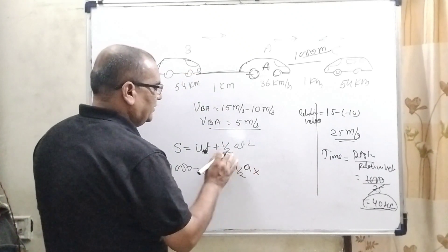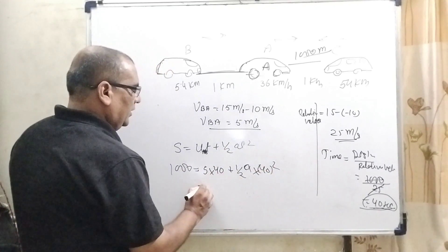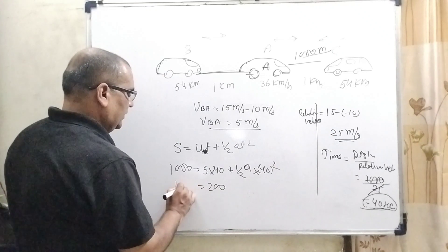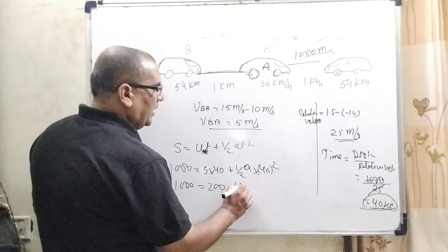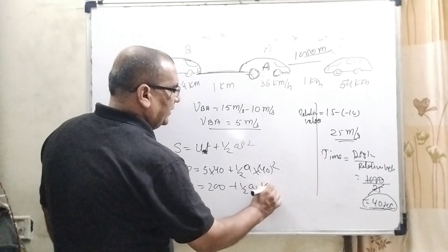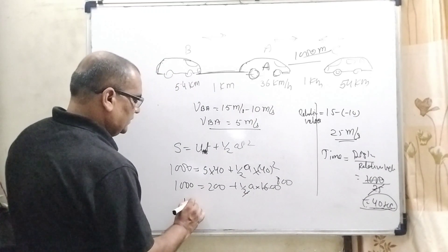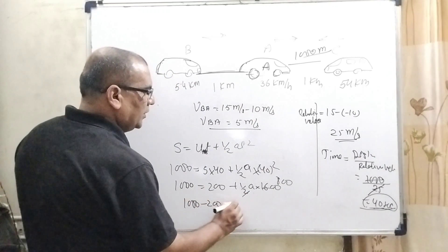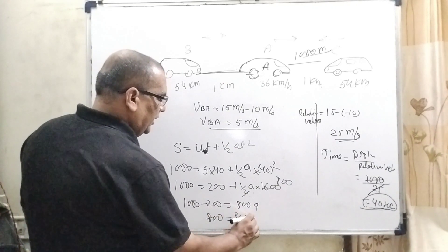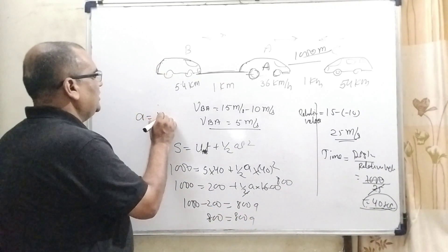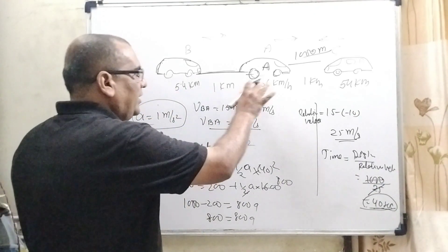One by two, here we have to find out acceleration. What is the acceleration? We get from this formula, that is 40 square. 5 times 40 is 200. 1000 meter, 1 by 2 A, 1600, cancel out, that is 800. 1000 minus 200 equals 800 A. So, A, acceleration is 1 meter per second square is required to avoid an accident.